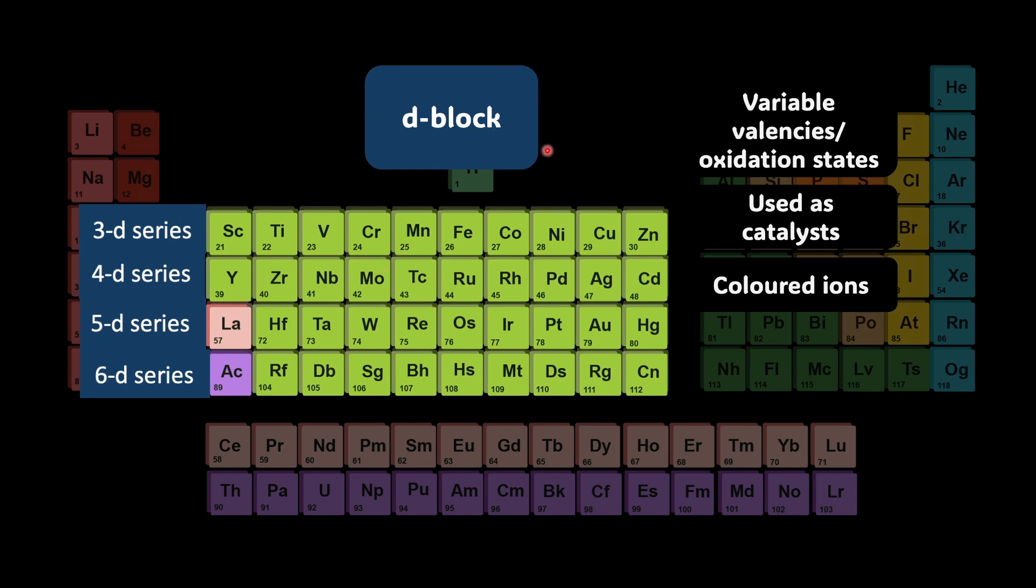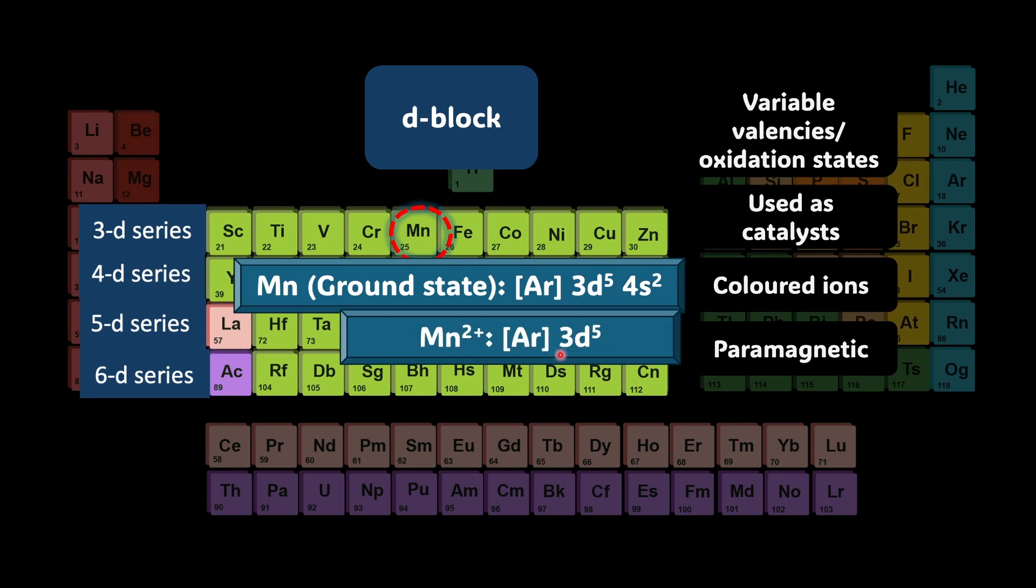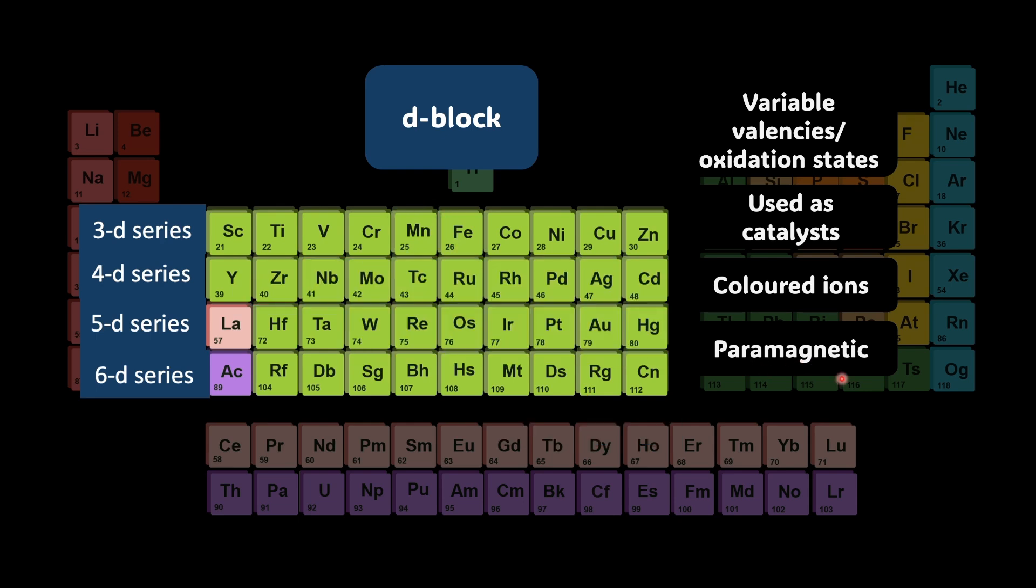Most D block elements are paramagnetic which means they're attracted to a magnetic field. The explanations are interlinked. They're paramagnetic because of the electronic configuration. For example manganese is 3d5 4s2. If I remove two electrons making manganese 2+ we have 3d5. We have so many unpaired electrons. The presence of unpaired electrons creates a small magnetic moment making the substance magnetic. Most important, you will not find a single non-metal in the entire D block. All of these are metals.